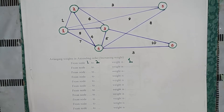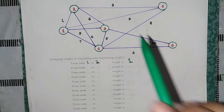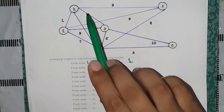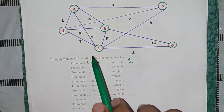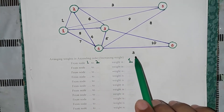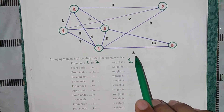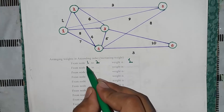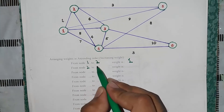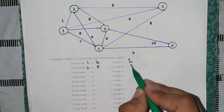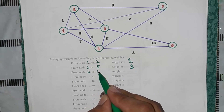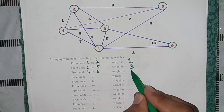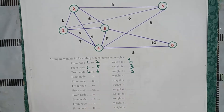After 1, the next weight is 3, and it appears in more than one position. One position is from node 2 to node 5 — this is also 3 — and node 4 to node 6 — this is also 3. So first we write: 2 to 5 is 3, and then 4 to 6 is also 3.